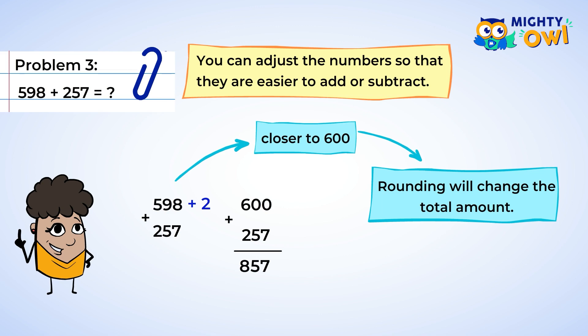But wait a second. Remember those two that we added to the five hundred ninety-eight? Now we need to take them back from the answer. Eight hundred fifty-seven minus two is eight hundred fifty-five. Our final answer is eight hundred fifty-five. Try adding the original numbers the traditional way, and you would get the same answer.